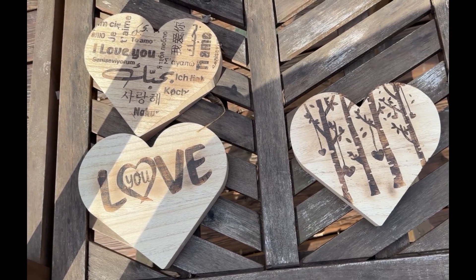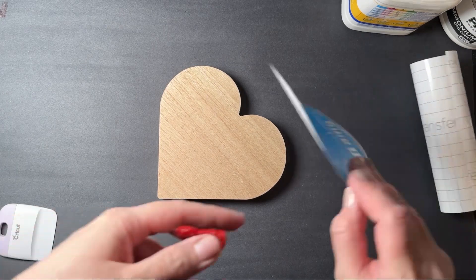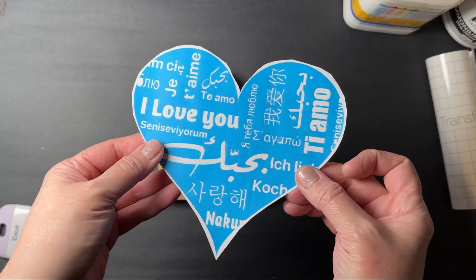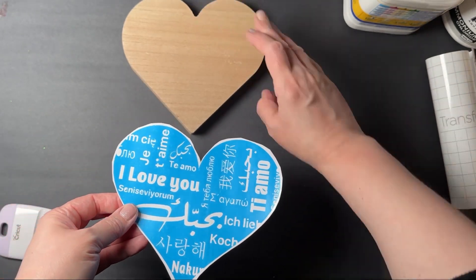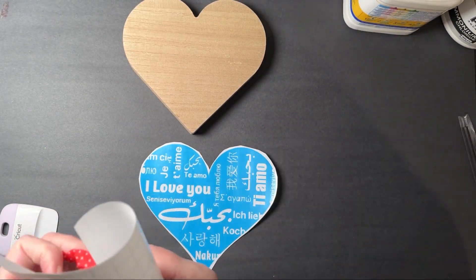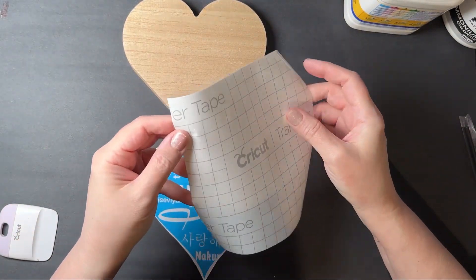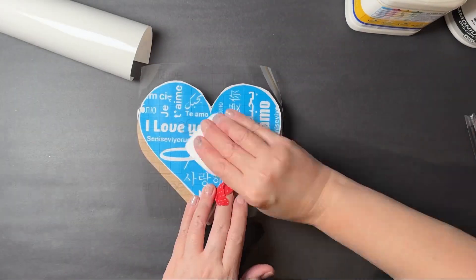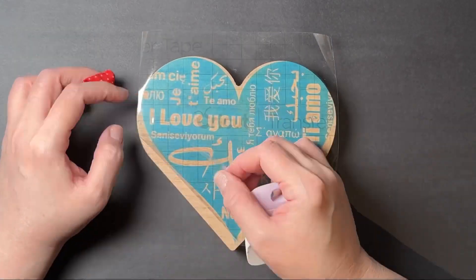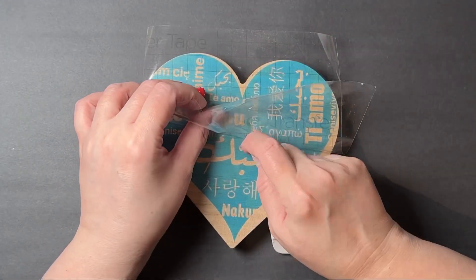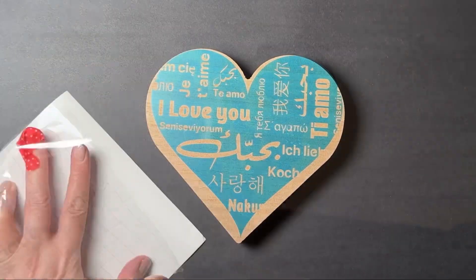So the first thing that I did is I made a stencil using my Cricut. If you don't have a Cricut, just go ahead and use any type of stencil. You just want to ensure that it has an adhesive backing. Then use some transfer tape to apply the stencil to the board that I'm using. You don't have to use a heart shape, any type of wood would do fine.